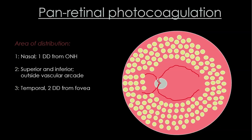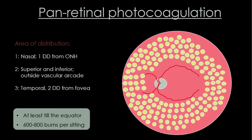In one sitting, do the nasal retina, leaving a gap of around one disc diameter from the optic disc edge. In another sitting, do the superior and inferior retina together, staying outside the vascular arcades. In the third sitting, fill out the temporal retina, keeping a gap of two disc diameters from the foveal edge. Each sitting involves around 600 to 800 burns, making a total of 1800 to 2400 burns for a complete three-session PRP. Burns need to go anteriorly at least to the equator, if not more.